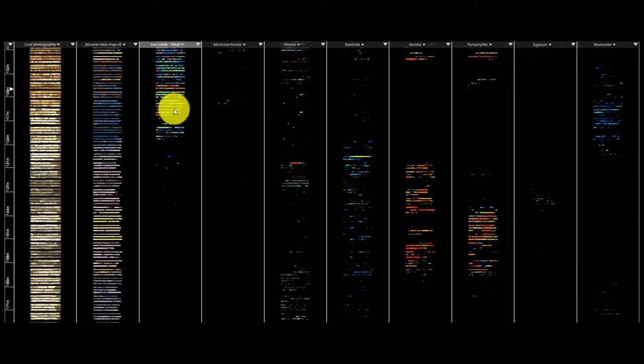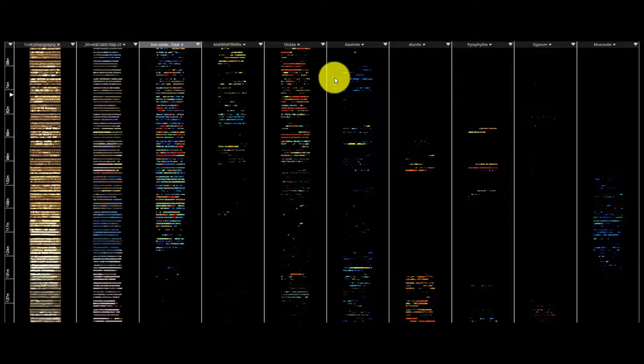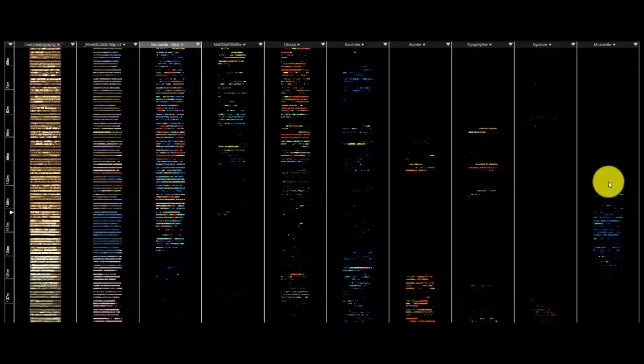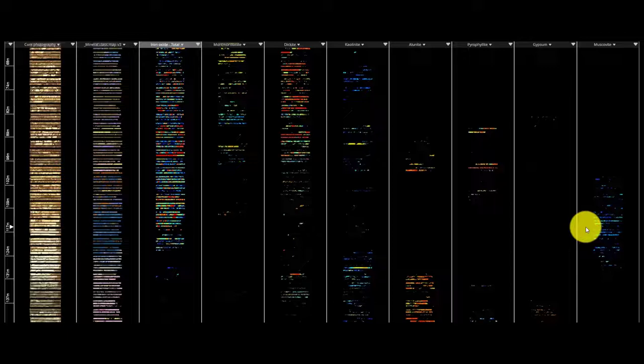Textures and stories of their own. They have this excellent iron oxide zone, but this iron oxide zone also has montmorillonite in it, has some dickite, kaolinite, allianite, paraphyllite, a little bit of gypsum, and even some muscovite towards the bottom of it. So it's more than iron oxide, right?